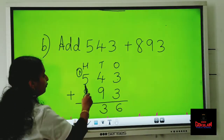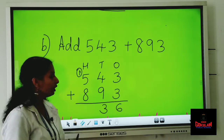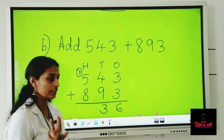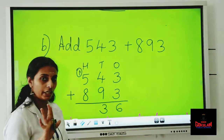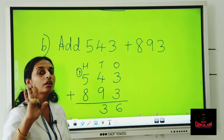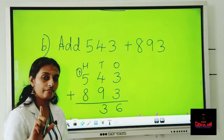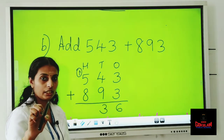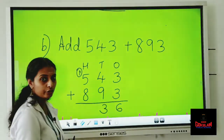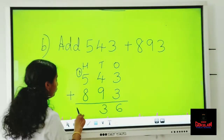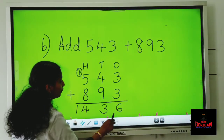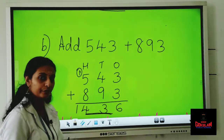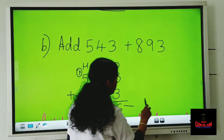And five plus eight — keep eight in the mind, five on the fingers. After eight: nine, ten, eleven, twelve, thirteen. Thirteen plus one carryover is fourteen. Don't forget to add the carryover. And this is the sum.